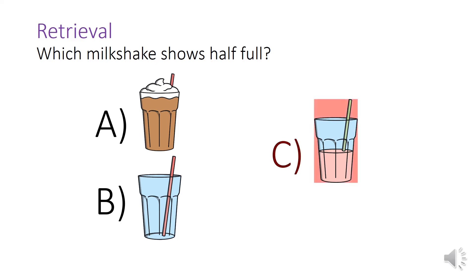Well done, it is C because the milkshake, so the fluid inside is halfway up the glass. So it's not near the top, it's not at the bottom, it's just halfway. So we could say it's half full. Well done.